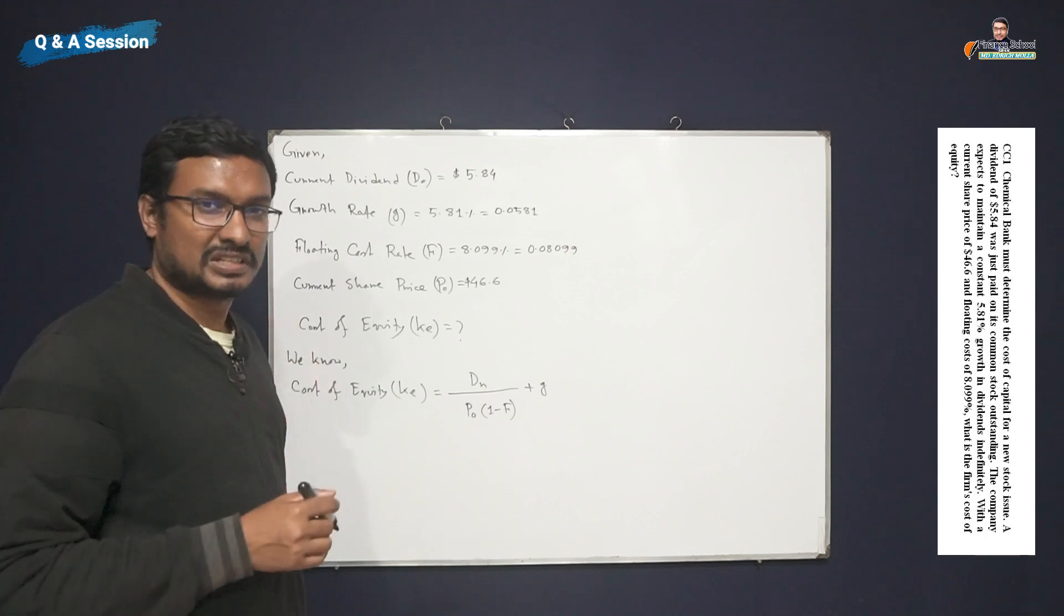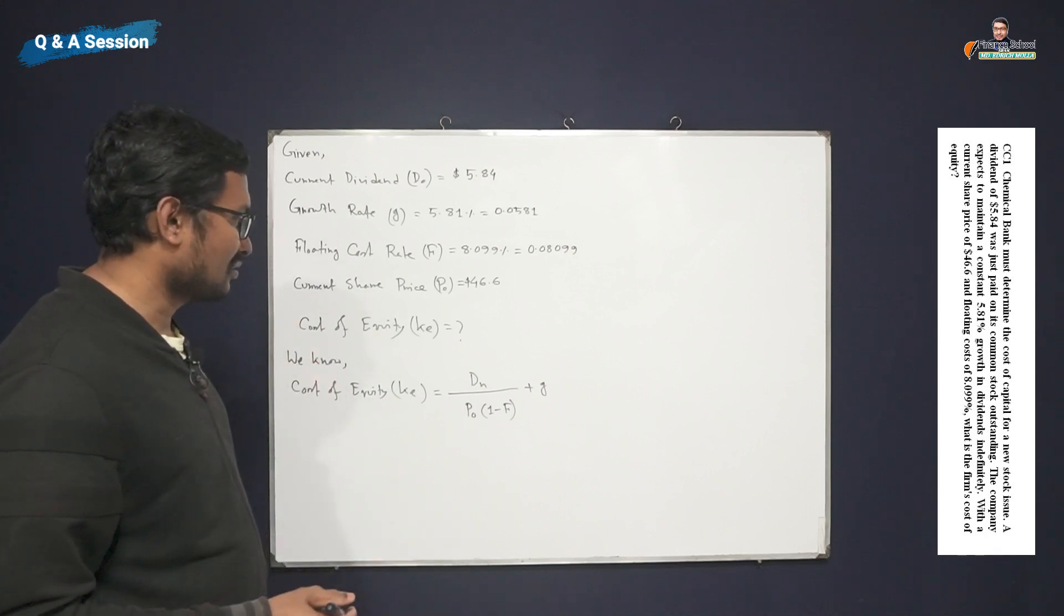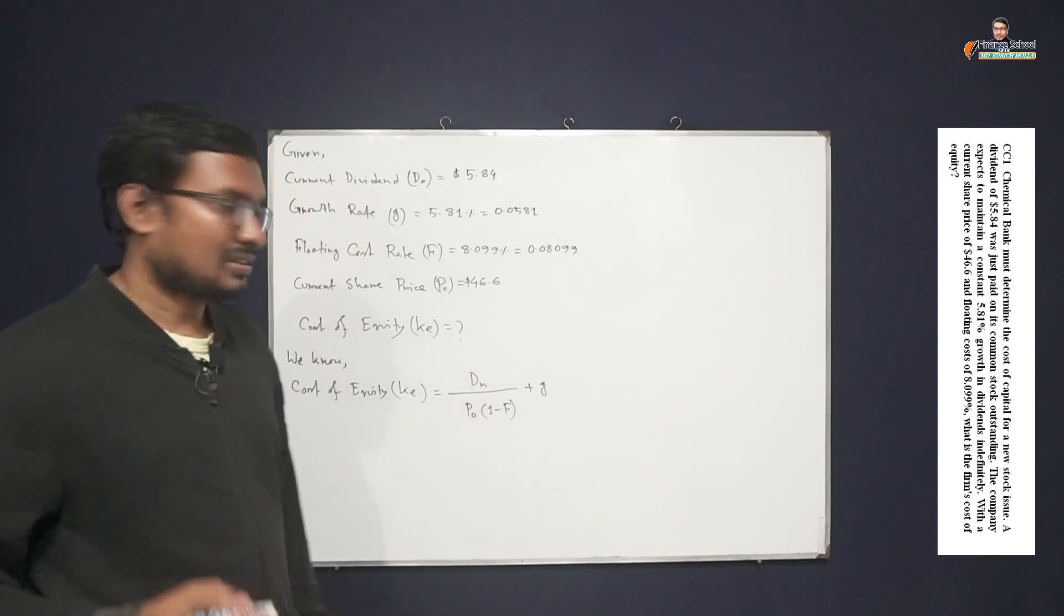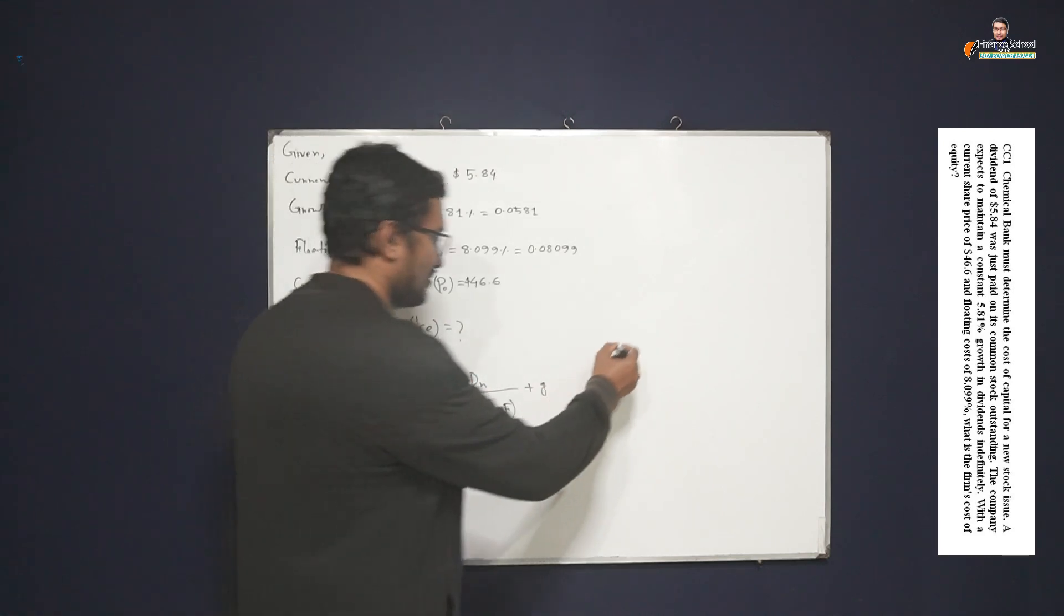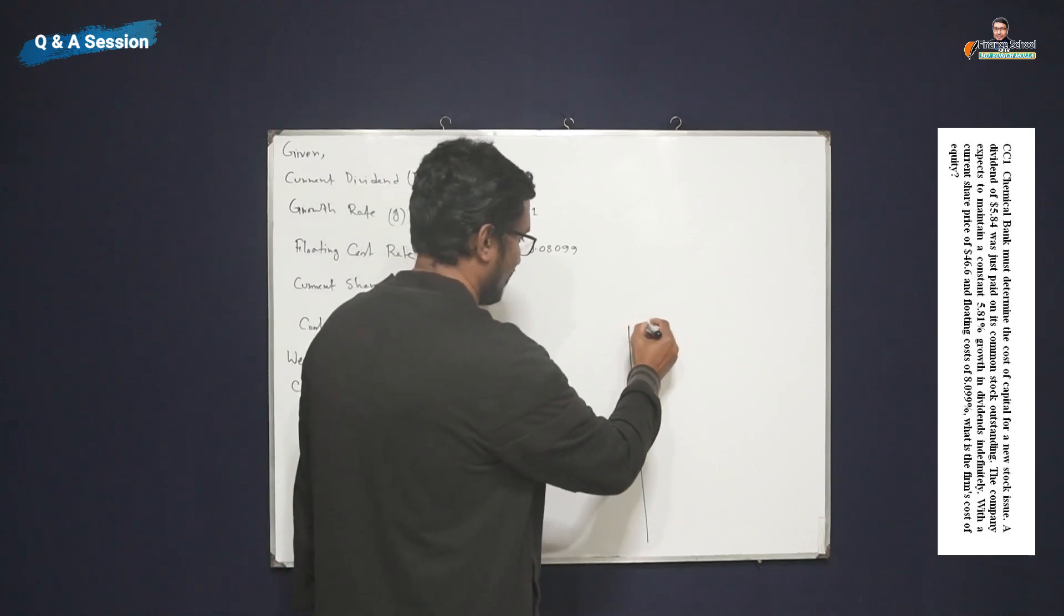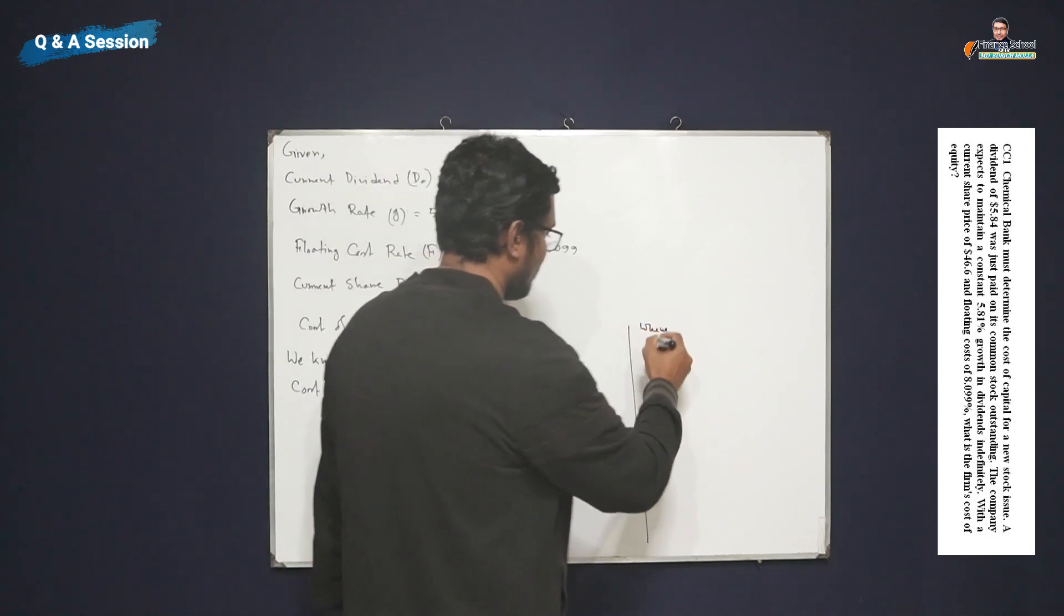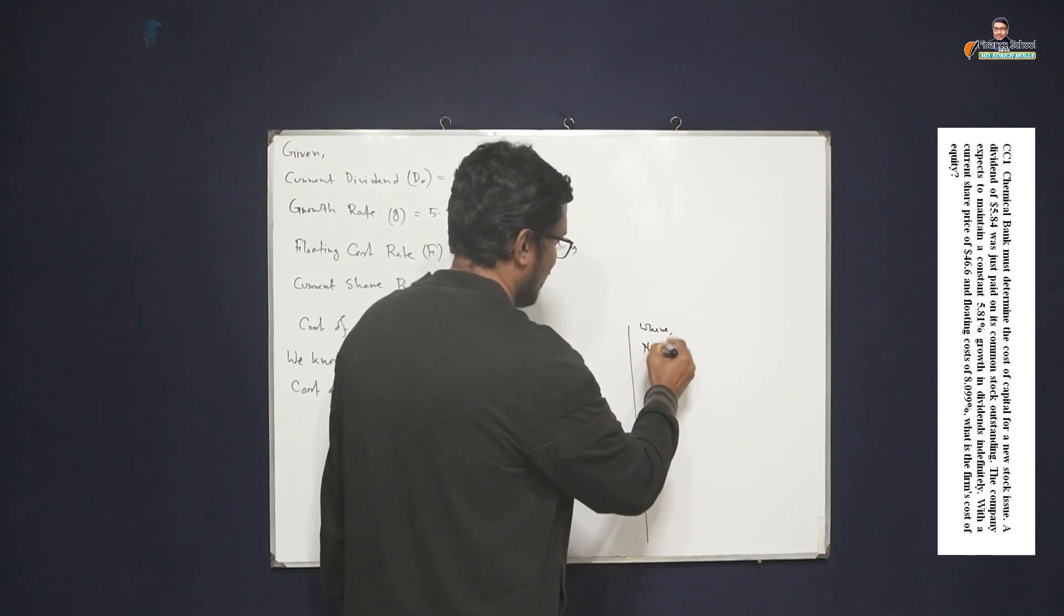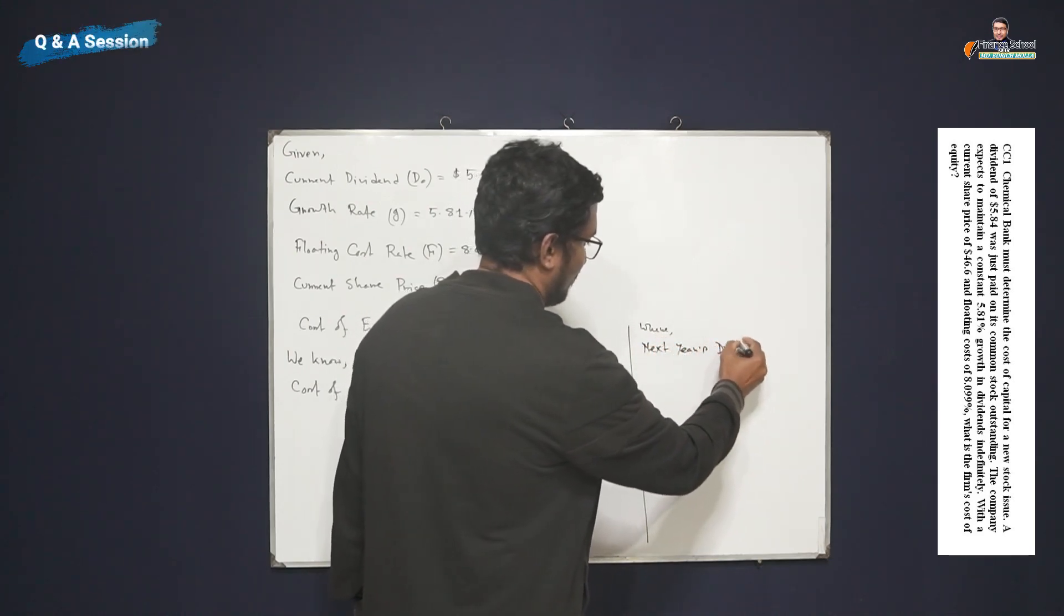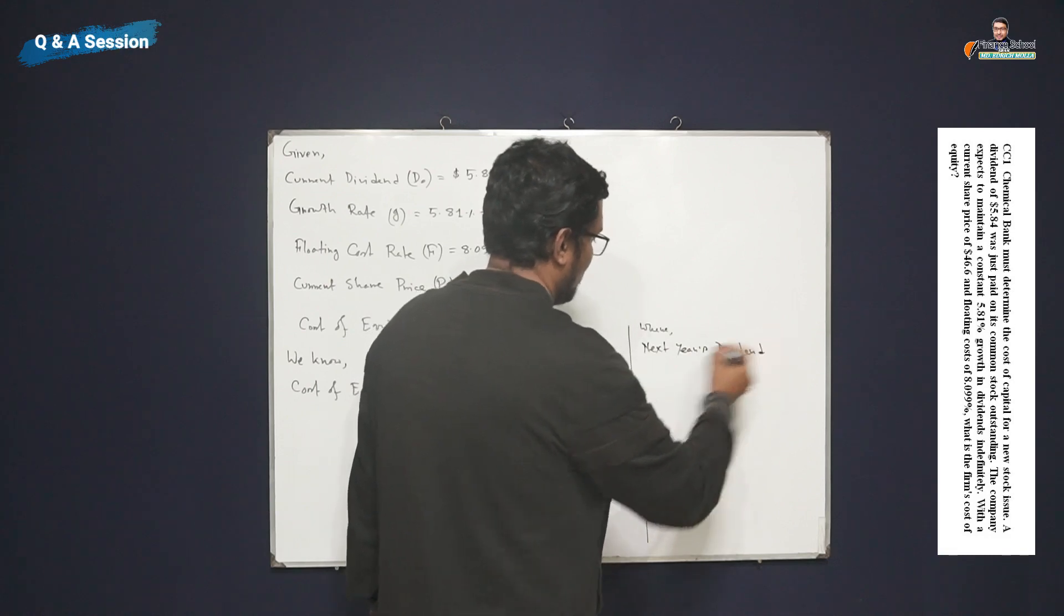Here you can see D₁. What is actually D₁? It represents next year's dividend, which is shortly written as D₁, and we have to compute D₁.